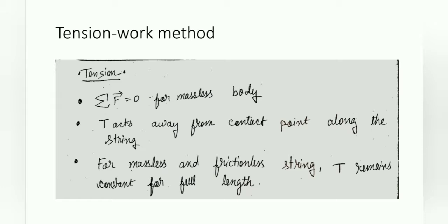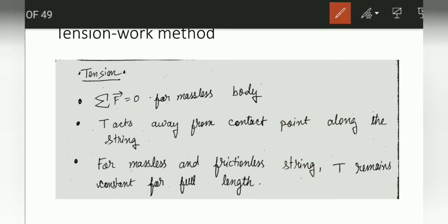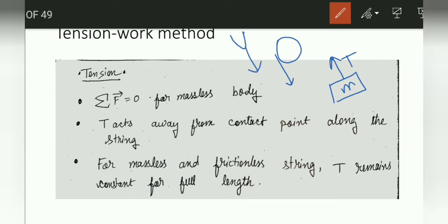Now let's start the Tension Work Method. Tension is the force acting on a string that pulls the object — it always acts as a pulling force, it never pushes. Suppose there is a mass m: the tension will always act away from the mass. Whether there is a pulley or a support, it always acts away from the contact point along the string.